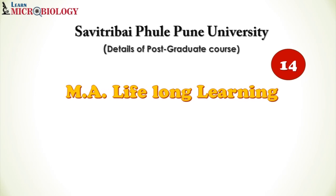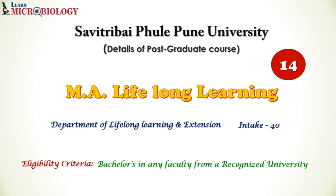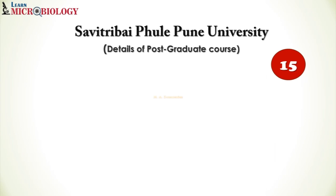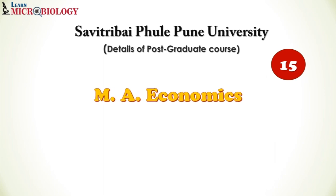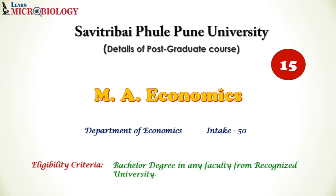Course number fourteen is MA in Lifelong Learning, offered by the Department of Lifelong Learning and Extension, with an intake capacity of 40 students. The eligibility is a bachelor's degree in any faculty from a recognized university. The last course, number fifteen, is MA in Economics. You can do this course even if you have done BSc. It is offered by the Department of Economics with an intake capacity of 50 students, and the eligibility criteria is a bachelor's degree from any faculty from a recognized university.